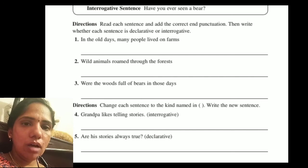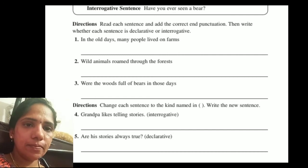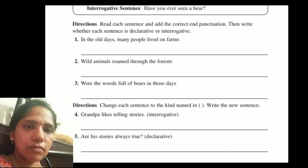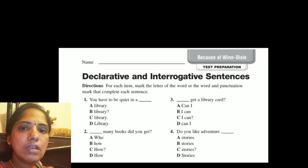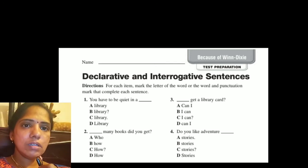'Are his stories always true?' This is an interrogative sentence that we change to a declarative sentence: 'His stories are always true.' Do you understand, students? Now here are some more examples.